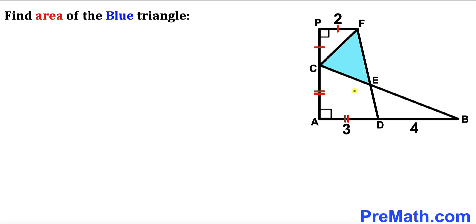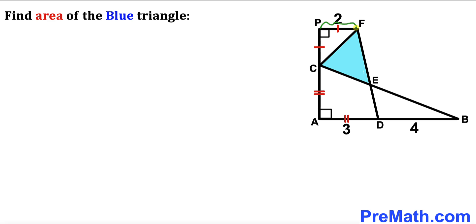Welcome to pre-math. In this video we have got this trapezoid ADFP and this right triangle ABC put together such that we get this blue shaded triangle CEF, as you can see in this diagram. This segment AD is 3 units, segment DB is 4, and segment PF is 2 units. Furthermore, segment AD is equal to segment AC, and segment PF is equal to segment PC. Our task is to calculate the area of this blue shaded triangle CEF.